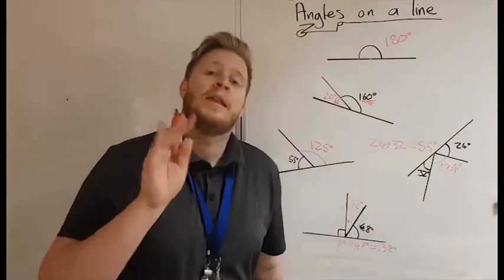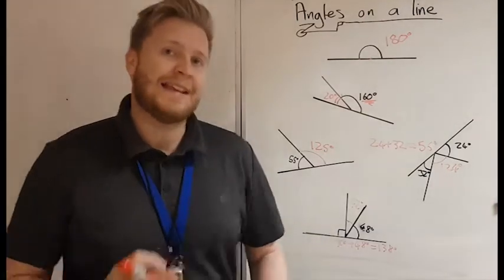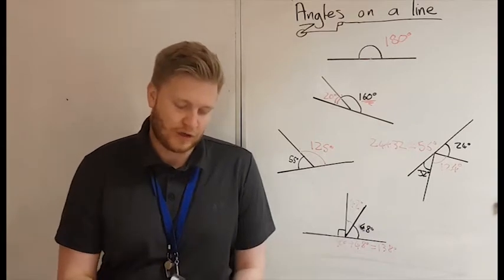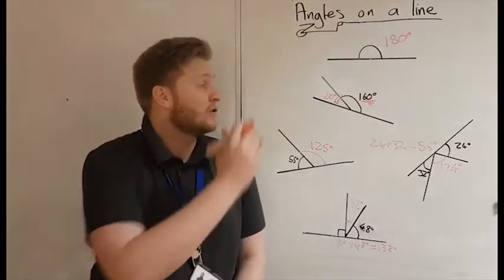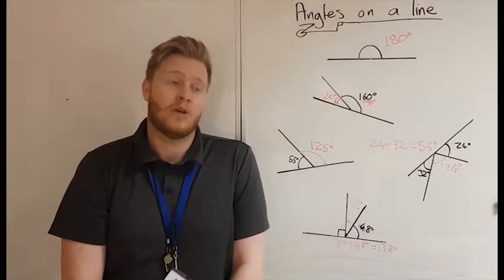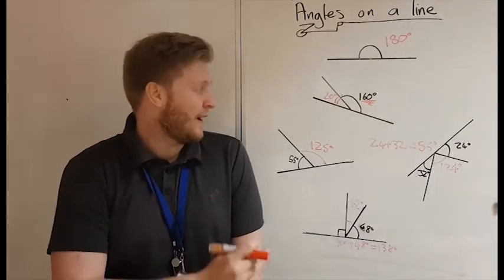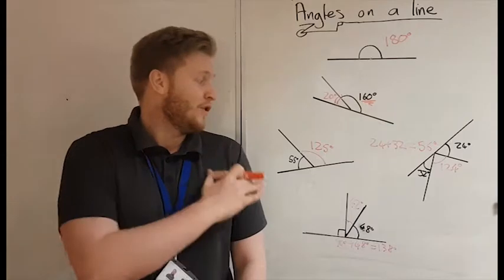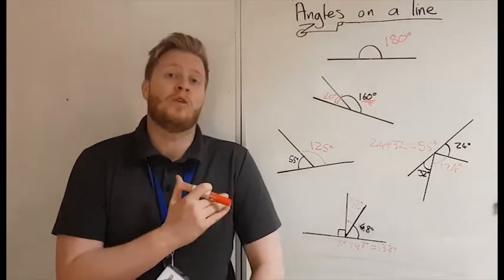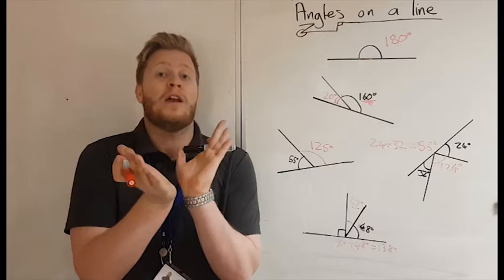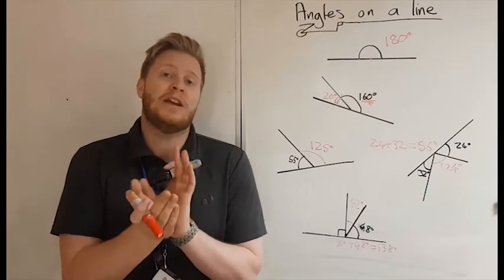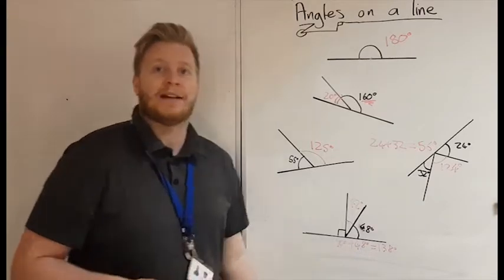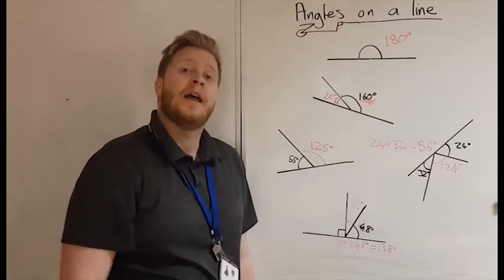Now when you get questions like this in tests, what they tend to do is they don't draw the angles to size because they're testing your knowledge about angles on a straight line or angles around a point. So don't think you'll use a protractor. You normally wouldn't have a protractor in those exams, but if you use one, you'll probably get the wrong degrees because they've drawn the angle wrong to make sure you can't do it. They'll make sure it's either acute, obtuse, or reflex, whichever it's supposed to look like, but they won't make it exact. This is us using what we know in order to work out missing angles.